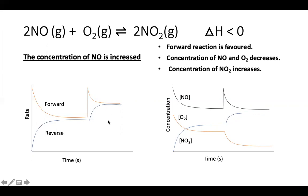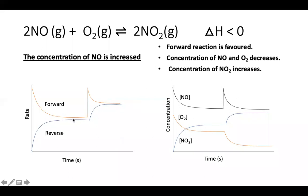There are two graphs to consider: a rate versus time graph and a concentration versus time graph. On the rate versus time graph, at the beginning the forward reaction (NO + O₂ → NO₂) proceeds, NO₂ builds up, and the rates level off to reach equilibrium where the lines are flat.